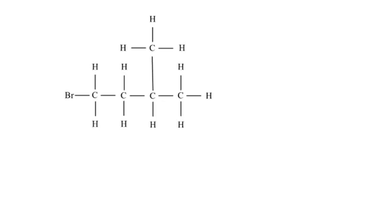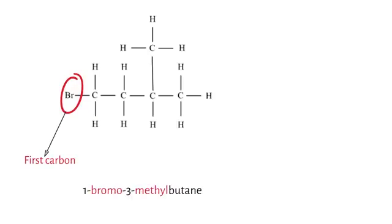Another example: we have a haloalkane with a halogen on carbon number one, which is Br. We start on the left-hand side because it's easier to find the substituent there. So Br is on the first carbon — yes, even though there's a branch, Br is still on the first carbon. Remember alphabetical order: position 1 for bromo, then methyl on the third carbon, on a butane structure. Butane represents four carbons, giving us 1-bromo-3-methylbutane — another example of a primary haloalkane.